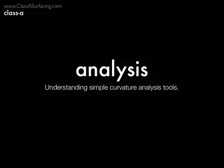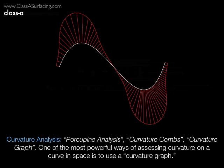All Class A surfacing tools provide a few basic tools, at least, for analyzing curvature. So the first one we're going to talk about is a porcupine analysis. This is the most common method for analyzing smoothness of a curve and to analyze continuity discrepancies between curves and surfaces.